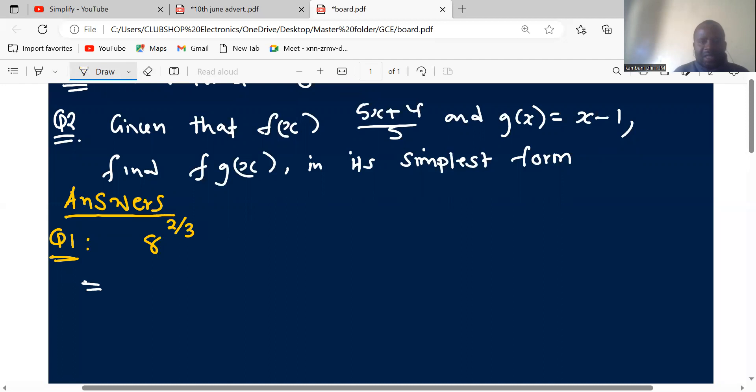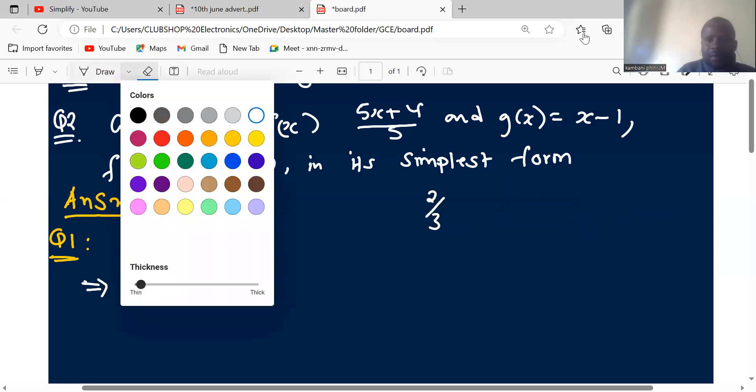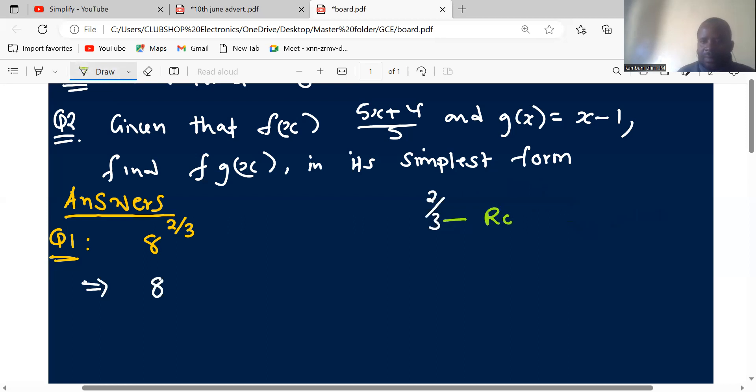So we are saying to evaluate. Here we need to find the exact value of this problem. Now you realize that you have got a base, which is eight, and the power, which has got a fraction. Now, if you have a fraction, for example, two over three as your power, this will tell you about the roots, and this will tell you about what we call the continuing power. Meaning that you must find the root first, then maintain the power. So this will tell you about the root, and this is the continuing power.